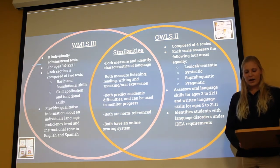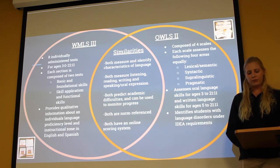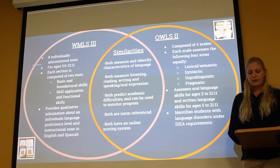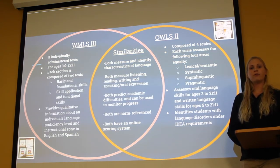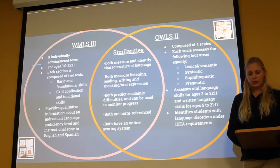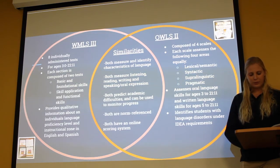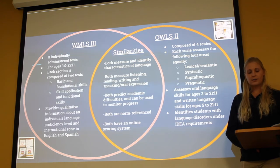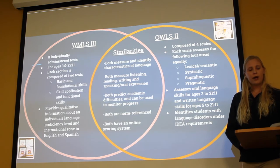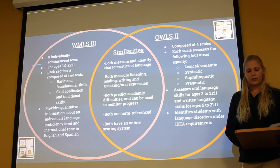The OWLS-2 is a set of four scales that collectively provide a comprehensive assessment of language. The scales are listening comprehension, oral expression, reading comprehension, and written expression. Together, the scales assess oral language for ages 3 to 21 and written language for ages 5 to 21. Each scale assesses four areas equally: lexical-semantic, syntactic, supralinguistic, and pragmatic. The OWLS-2 identifies students with learning disabilities, language disorders, and related difficulties in accordance with IDEA requirements.